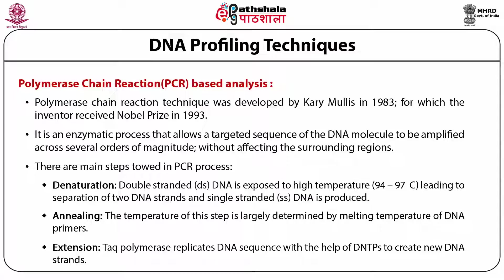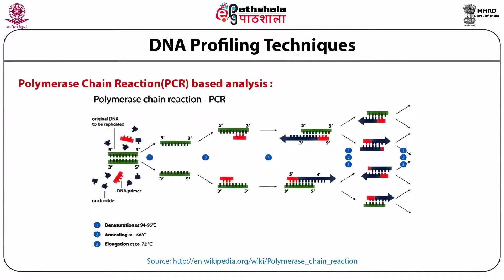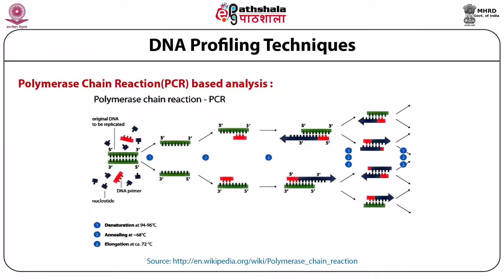The temperature of the extension step is usually 70 to 72 degrees Celsius for optimal activity of Taq polymerase. The nucleotides — adenine, guanine, cytosine and thymine — are used as building blocks to develop a complementary strand to the template strand. At the end of each PCR cycle, the targeted segment is duplicated. This process is repeated several times to generate multiple copies of the DNA segment of interest. The image shows the different steps of PCR: denaturation, annealing, and extension.